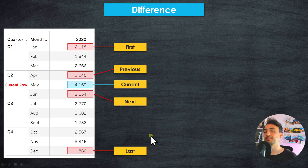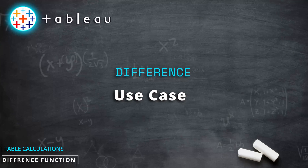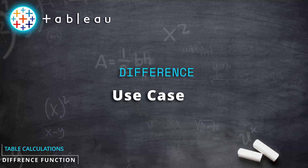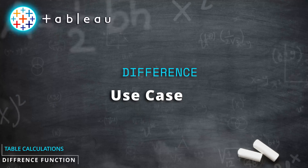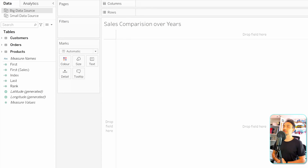This means in Tableau we get really great control over which data points can be compared to each other. Now let's go back to Tableau and start practicing this function.